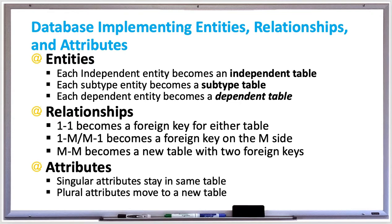Attributes can be unique, which have a maximum cardinality of one. They can be not null, which have a minimum cardinality of one. They can be primary keys, which have a minimum and maximum cardinality of one. And if no keyword is specified, then it has a minimum cardinality of zero and null values are allowed.